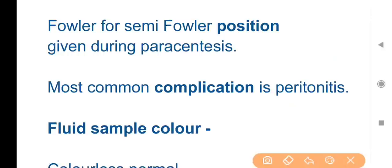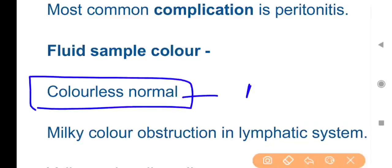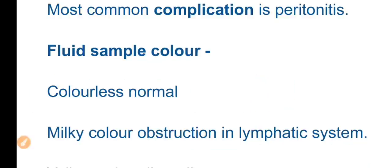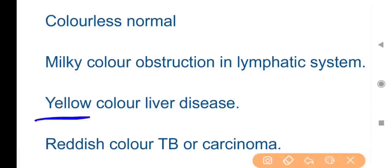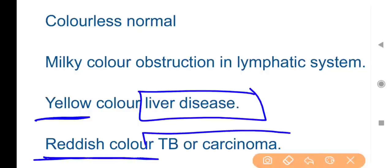Before paracentesis needle insertion, the patient must empty their bladder to prevent rupture during needle insertion. Regarding fluid color: colorless is normal; milky color indicates lymphatic system obstruction; yellow indicates liver disease; reddish color indicates TB or carcinoma.